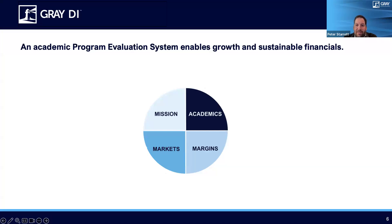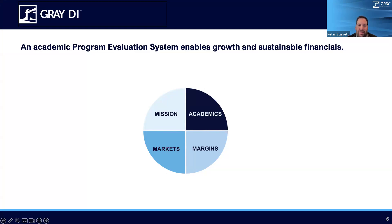Lastly, it is important to look at program margins. Not all programs need to make a large profit, but there do need to be high-margin programs to subsidize those critical to the mission that might be closer to break even or below. It's important to understand the margins of programs and identify opportunities so we're not running all programs at break even when there are overhead costs all the way up through the president's office. This is also where you can identify efficiency opportunities within programs using information like cost per student credit hour, fill rates, and much more.